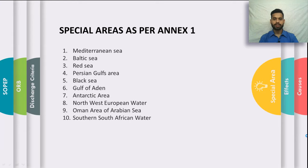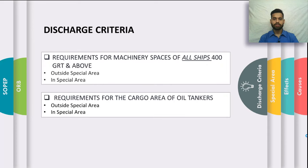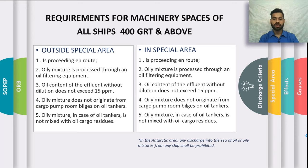The discharge criteria as per Annex 1 is an important part, often asked in examinations. Any oil or oily mixture is prohibited from discharge into the sea unless certain requirements are satisfied. These requirements are discussed in two parts: requirements for machinery spaces of all ships of 400 gross tonnage and above — both outside and inside special areas — and requirements for cargo areas of oil tankers.